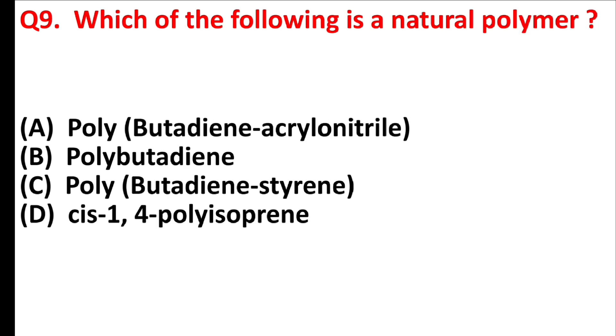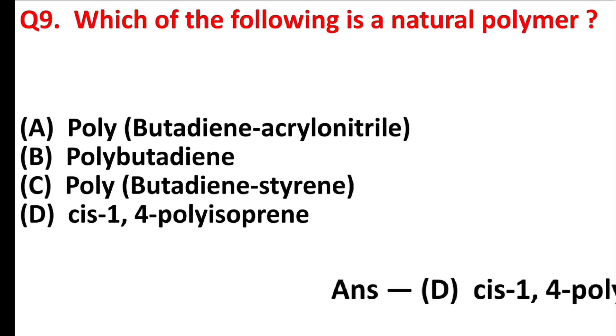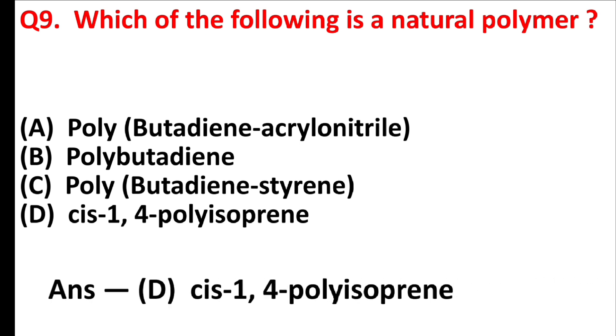Which of the following is the natural polymer? Answer is option D: cis-1,4-polyisoprene.